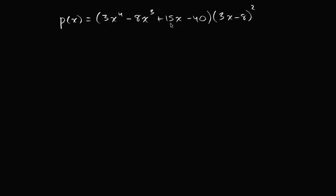So I have the polynomial p of x here, and p of x is being expressed as a fourth degree polynomial times three x minus eight squared. This would give you a sixth degree polynomial all in all, but our goal is to find the x values where that makes p of x equal to zero — the roots or the real zeros of this polynomial.